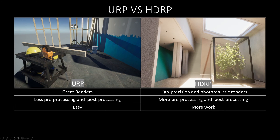The URP is artist-friendly with a quick and easy workflow. On the other hand, the HDRP requires more work and graphic skills to fully utilize its power. This is linked to the fact that the HDRP has more advanced physical-based lighting, shaders, materials, and post-processing effects, which requires more work to utilize its full power.